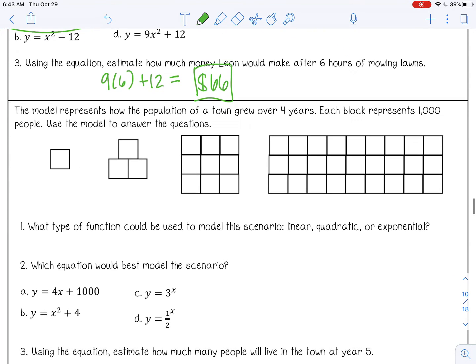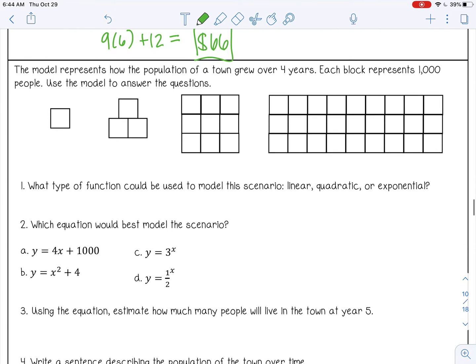Last example. The model represents how the population of a town grew over four years. Each block represents 1,000 people. Use the model to answer the questions. So let's count these blocks here. So the first one, I'm starting with 1. And then 3, 9. And then let's see. 3, 6, 9, 12, 27.